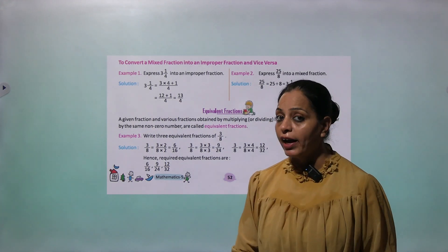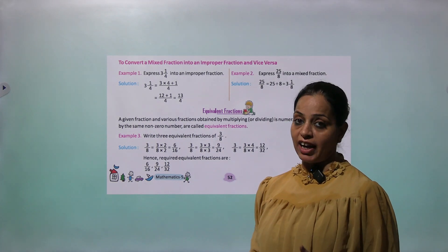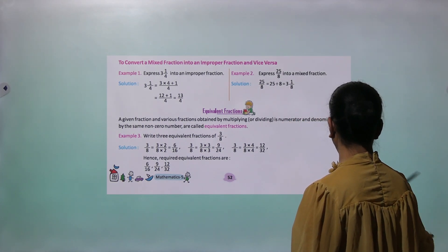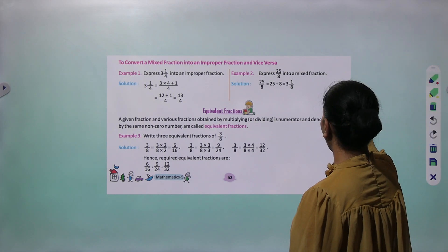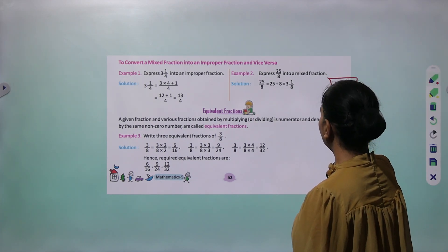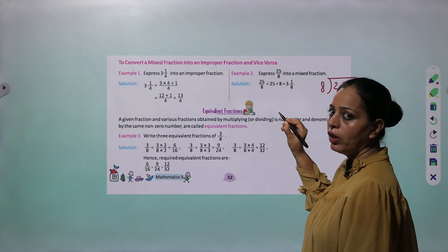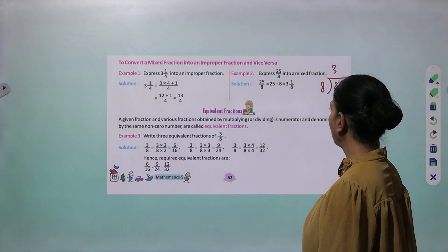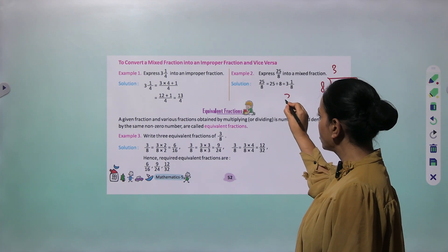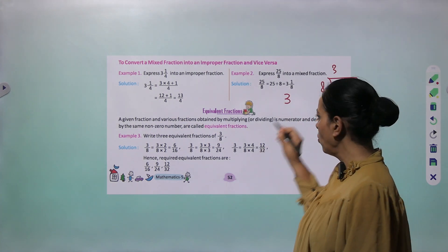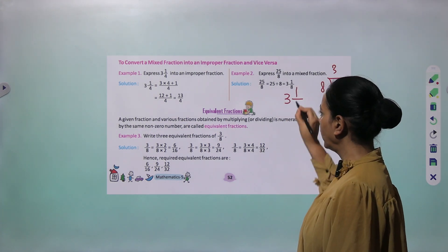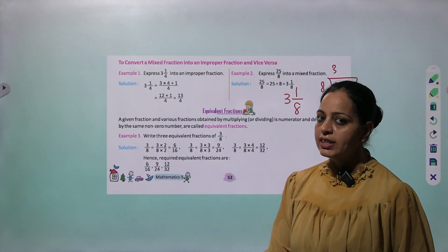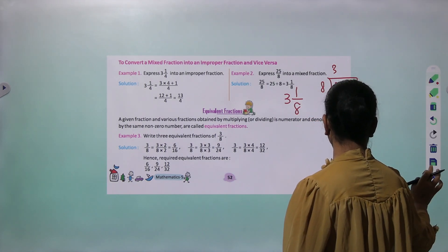Example 2: Express 25 upon 8 as a mixed fraction. Divide 25 by 8. 8 threes are 24, so the quotient is 3. The quotient becomes the whole part. The remainder becomes the numerator, and 8 remains the denominator. So the answer is 3 whole 1 by 8.